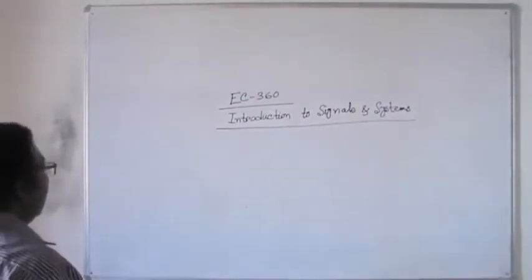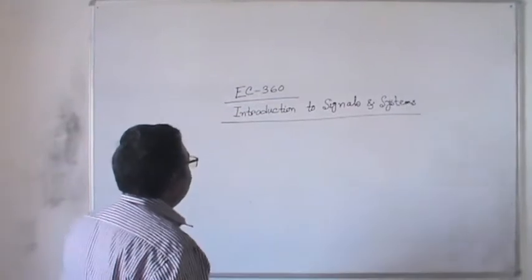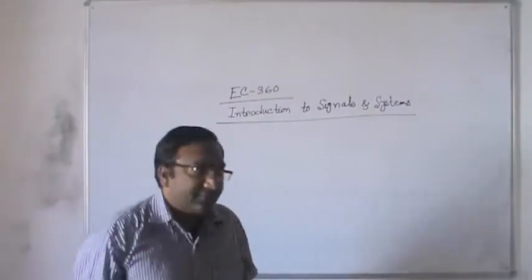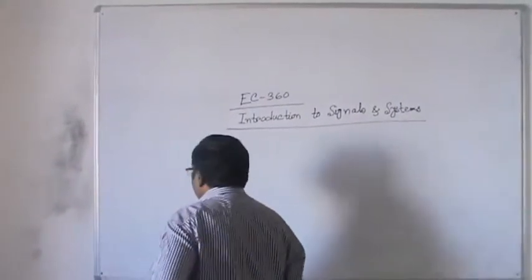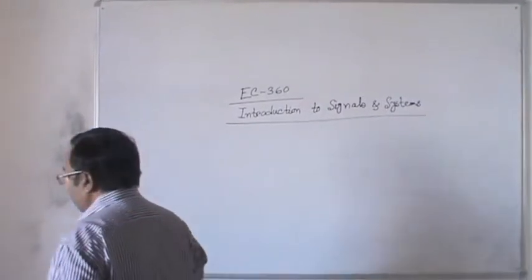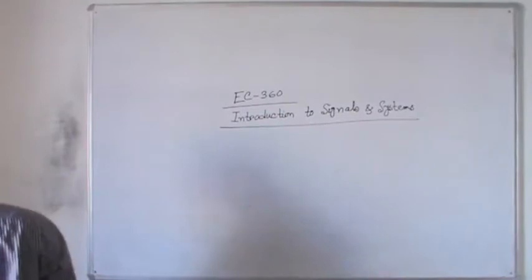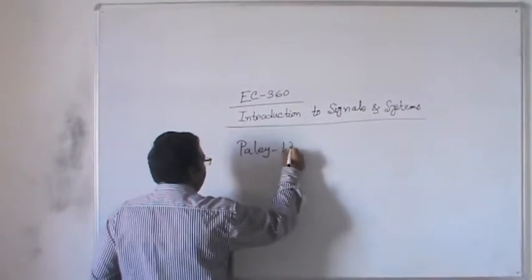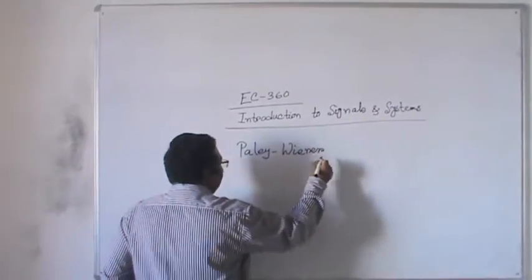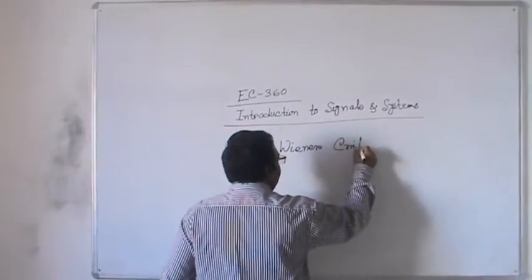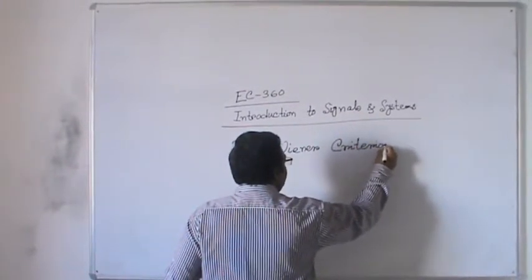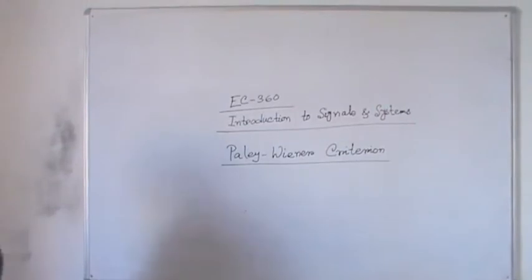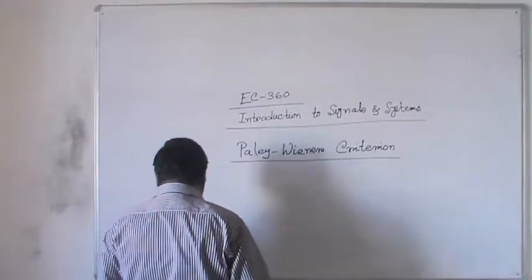Today we will cover the next portion for introduction to signals and systems. Two topics are left: one is known as the Paley-Wiener criterion, and the second is about stability. Let us first write the expression for the Paley-Wiener criterion.